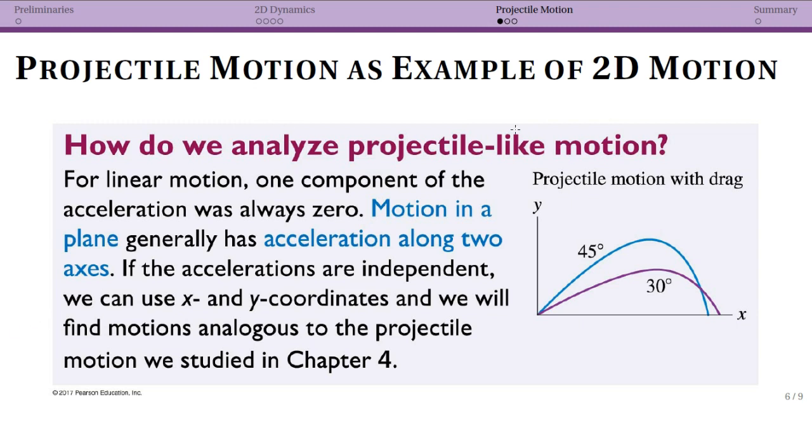So the nice thing about perfect projectile-like motion where we get to say that air resistance is zero is that this actually is a model for many types of two-dimensional motion where you only have to worry about your acceleration in one dimension because you have uniform motion in the other. So linear motion, which is what we talked about before, one component of the acceleration is always zero. And that's something like the acceleration perpendicular to a ramp.